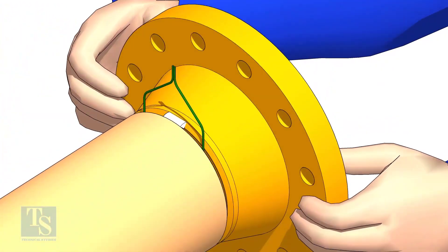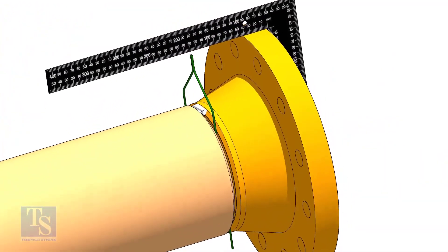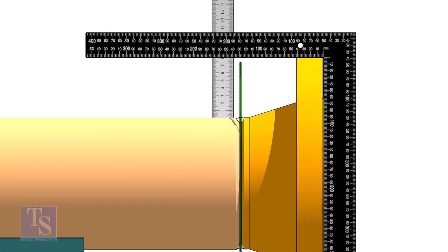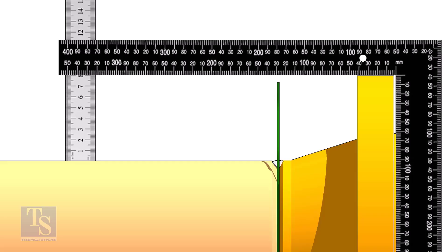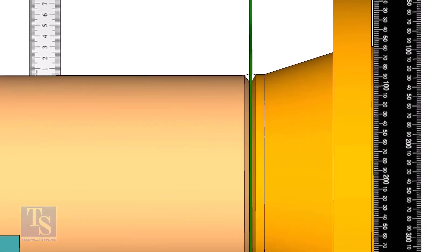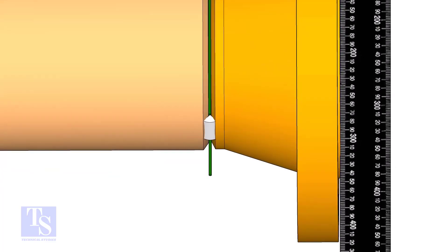Hold the flange, with a gap rod in the joint, tack weld on top side of the joint. Check the squareness of flange face to the pipe as shown. Tack weld at the bottom side of the joint.